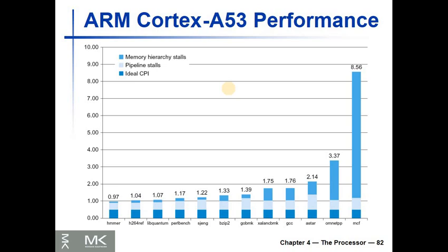A study shows the performance achieved on the A53 processor on multiple benchmarks. The ideal CPI for this dual-issue processor is 0.5 — it could execute two instructions per clock, or half a clock per instruction. But most benchmarks achieve about one or more clocks per instruction. The worst is MCF, which on average spends about eight and a half clocks per instruction.